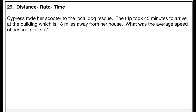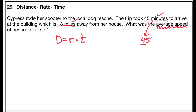Problem number 29 deals with distance, rate, and time. Cypress rode her scooter to the local dog rescue; the trip took 45 minutes to arrive at a building 18 miles away. What was the average speed? Using distance = rate × time, I have distance = 18 miles and time = 45 minutes. Since the units differ, I convert 45 minutes to hours: 45/60 = 0.75 hours.